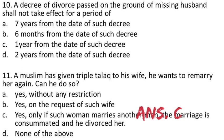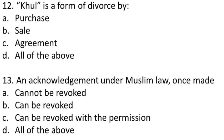Question 12: Khul is a form of divorce by — (A) purchase, (B) sale, (C) agreement, (D) all of the above. The answer is A: purchase.